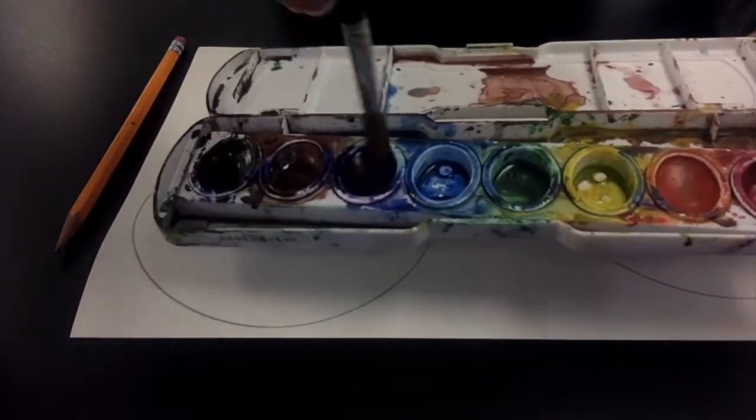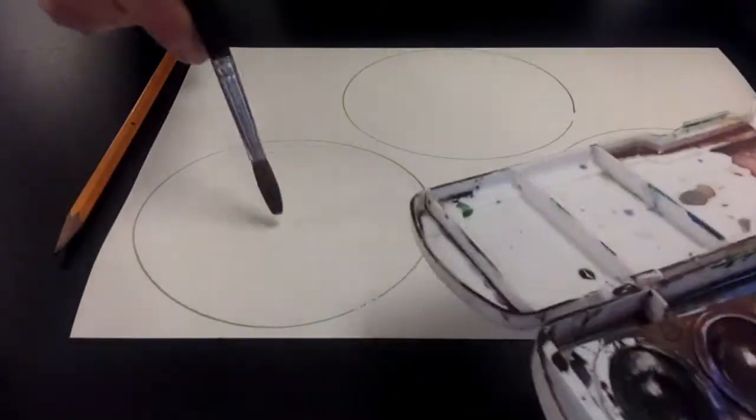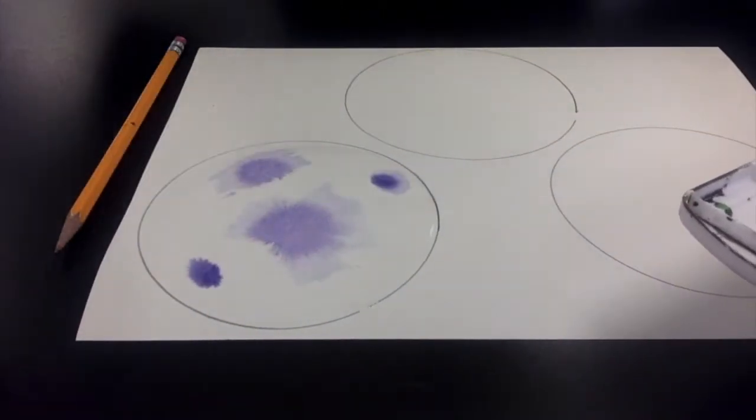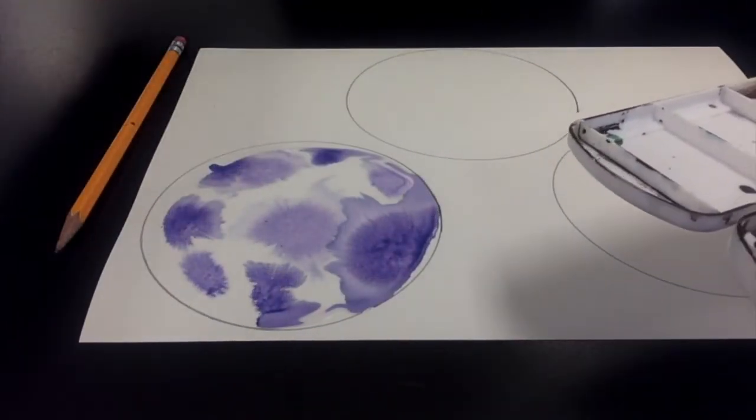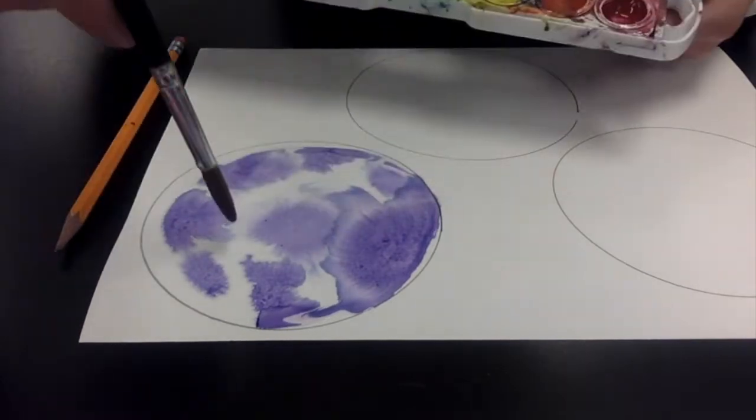Now you'll notice this is a wet on wet watercolor technique. Put water on the paper and then look at that color just spread in the water. That is amazing. It looks so beautiful.